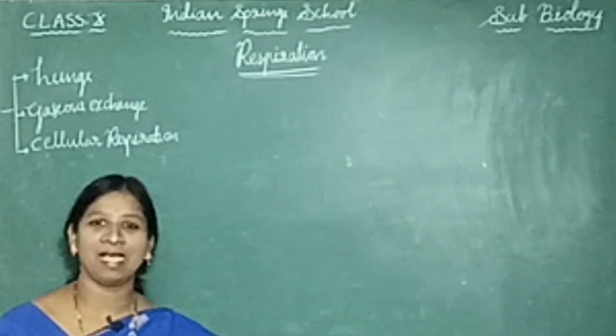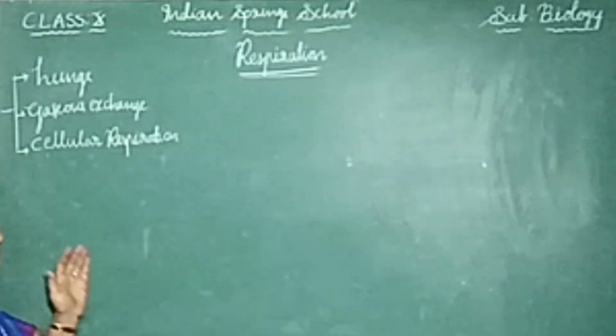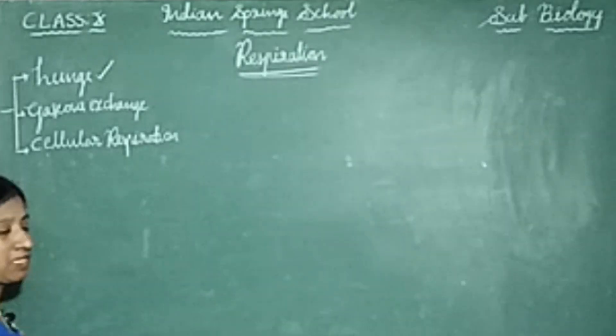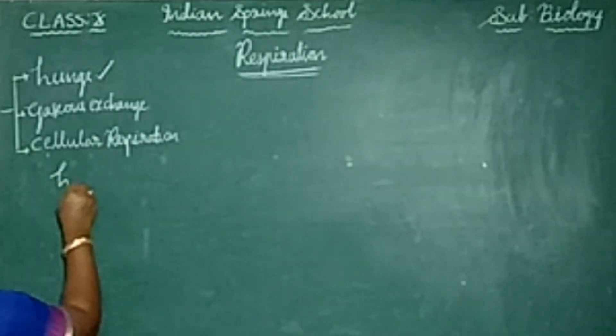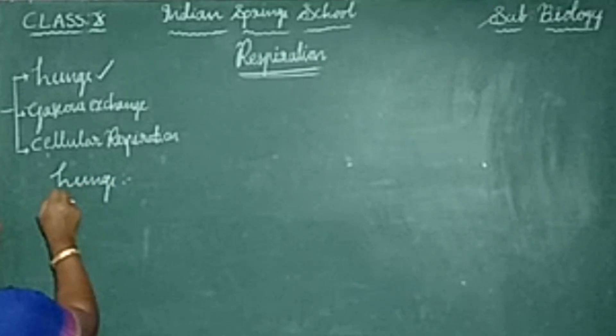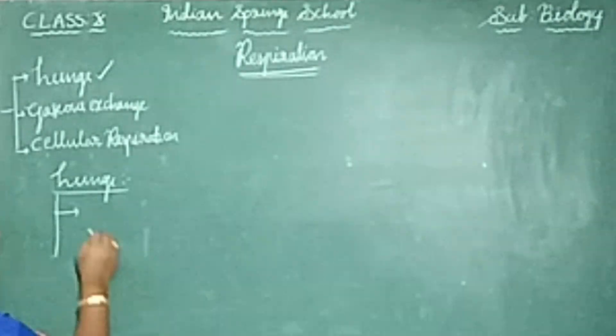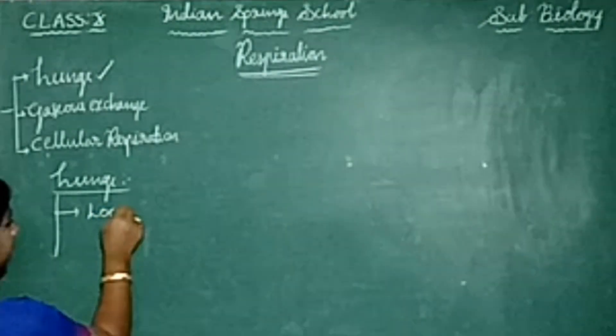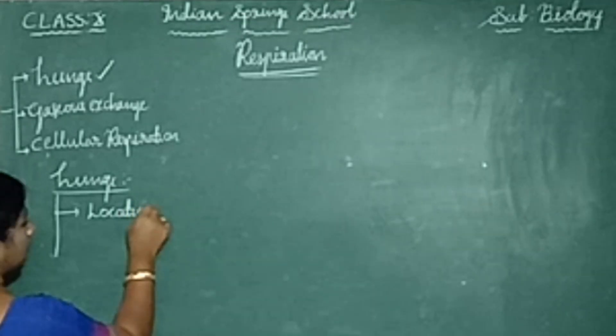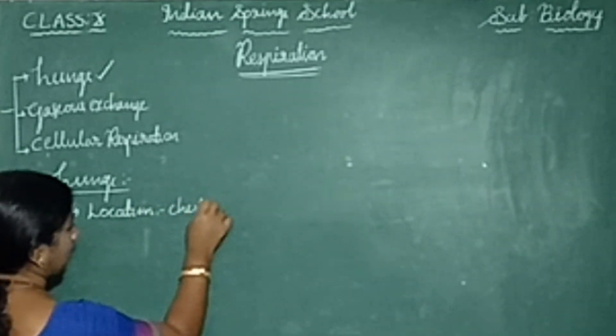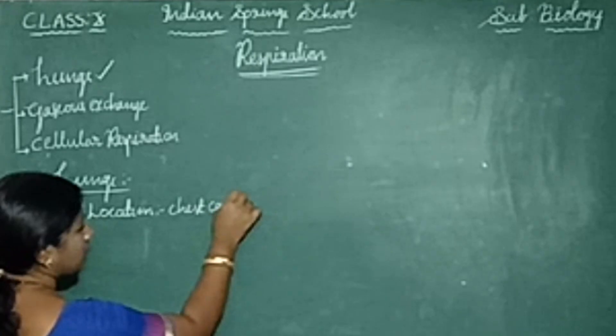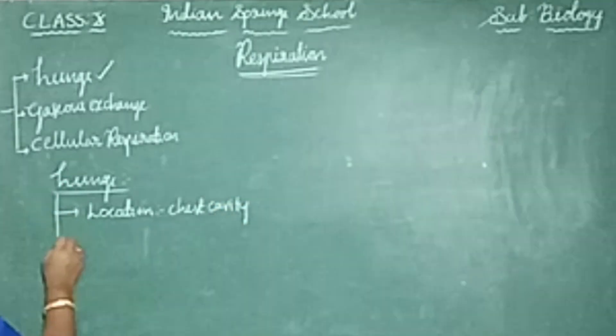So in today's class we are going to discuss about lungs, gaseous exchange and cellular respiration. So let us see the first topic about the lungs. When you talk about lungs, the first point is where the lungs are located. Lungs are located in chest cavity. Do you know how many lungs we have? We have two lungs.